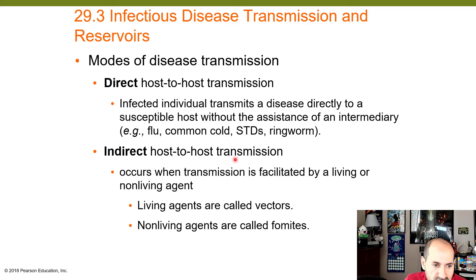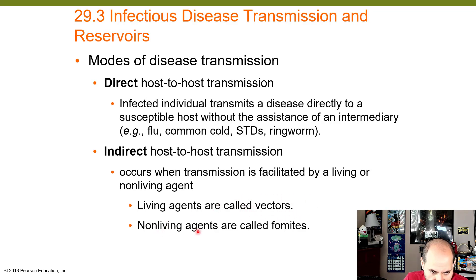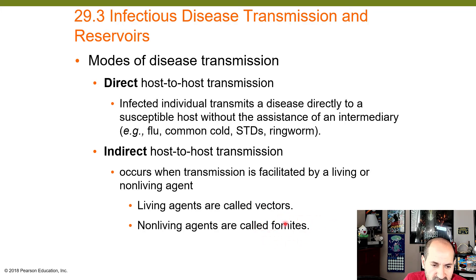Indirect host-to-host transmission occurs when transmission is facilitated by either a living or non-living agent. Living agents — such as mosquitoes, ticks, or lice — are called vectors. Non-living agents — like a doorknob or bedding — are called fomites. If a mosquito bites me and then bites you and you get the disease, that's a vector. If I touch a doorknob and then you touch the doorknob, that's a fomite.